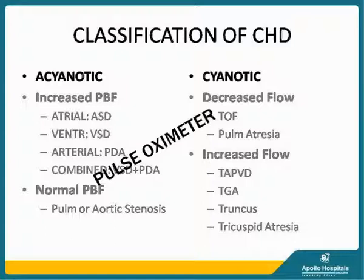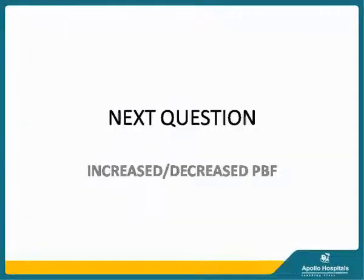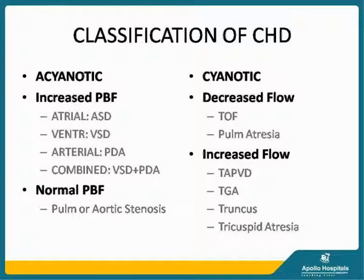The first branch point between cyanotic and acyanotic is actually made using a pulse oximeter. Once the saturation is below 93 percent and you are suspecting a heart problem, it is classified as cyanotic heart disease. The next question is whether it is increased or decreased pulmonary blood flow, and this would further classify cyanotic into increased or normal pulmonary blood flow, and acyanotic into decreased and increased pulmonary blood flow.